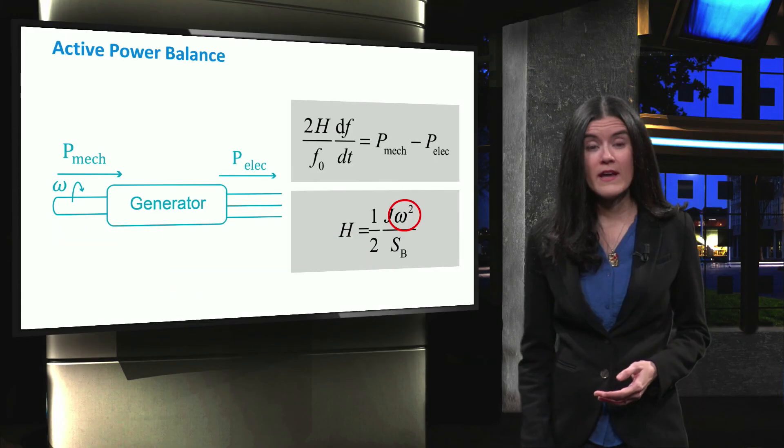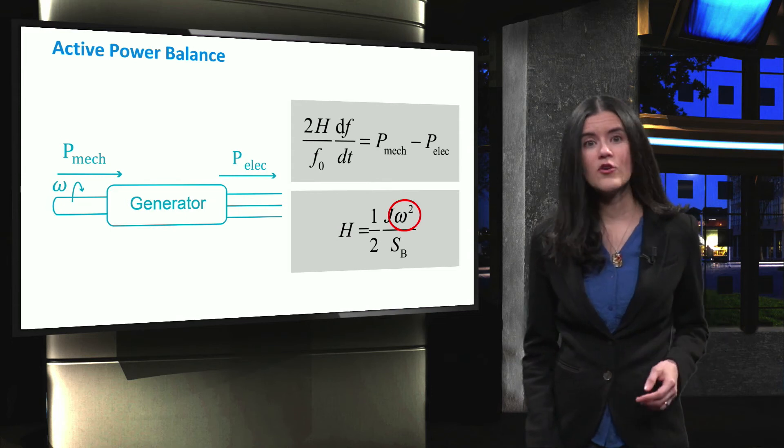Note that the angular momentum J depends on both the mass and the geometry of the rotor.